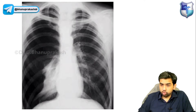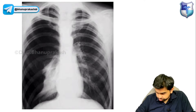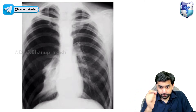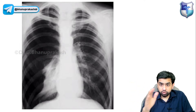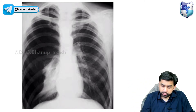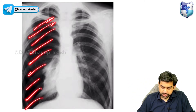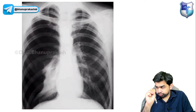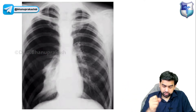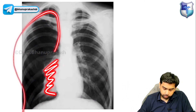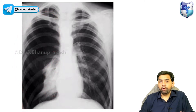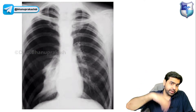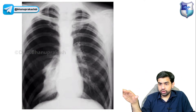Most of you would know this X-ray, but for those who might get confused between pneumothorax and other X-rays — this part of the lung appearing more black indicates a collapsed lung. The bronchovascular markings are missing over there, and because of the loss of bronchovascular markings, that part of the lung appears more black.